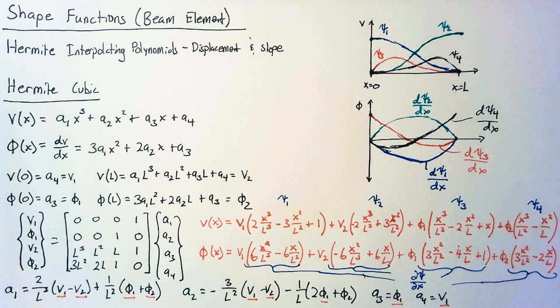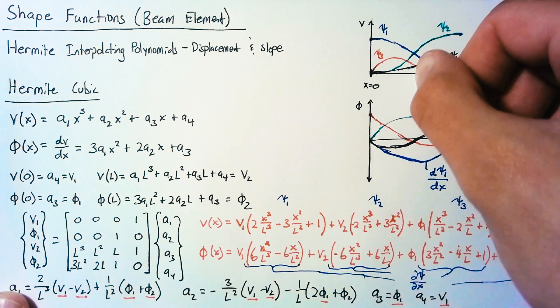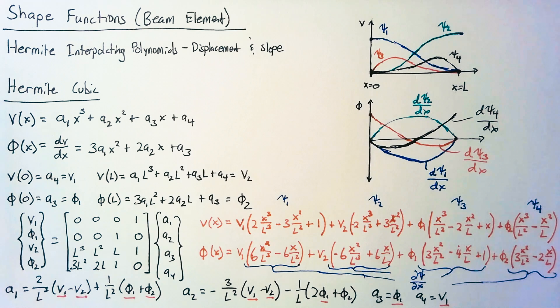Now, if we want to go to higher order for the beam elements, essentially what we would need to do is go ahead and put a third node in here. And then we stop being a true Hermite interpolating polynomial, but it allows us to get even more refinement.